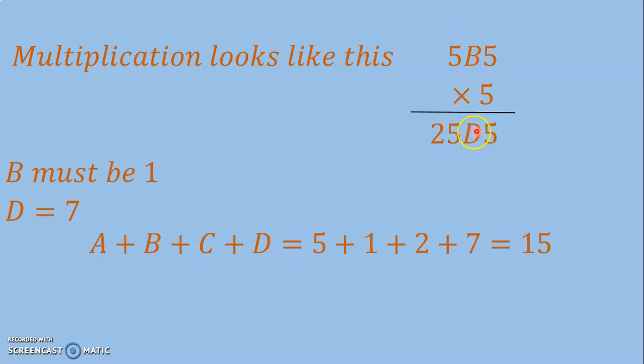Substituting these values: A is 5, B is 1, C is 2, D is 7. The result is 15. Thank you.